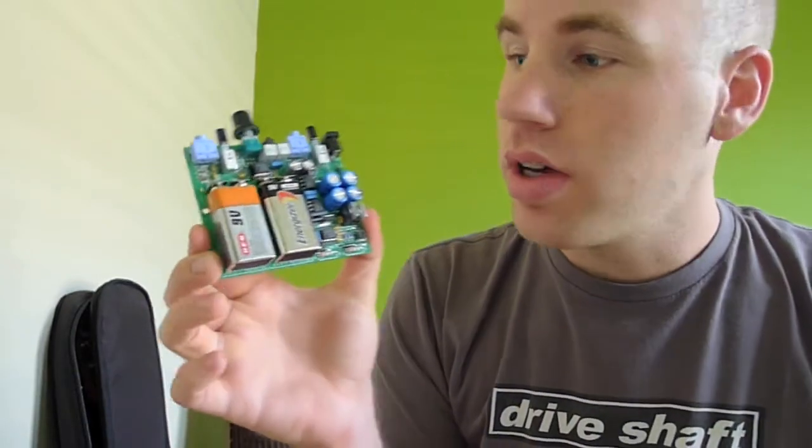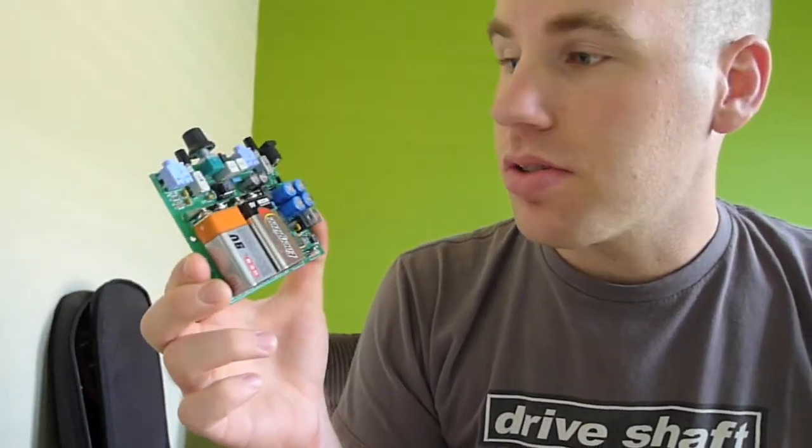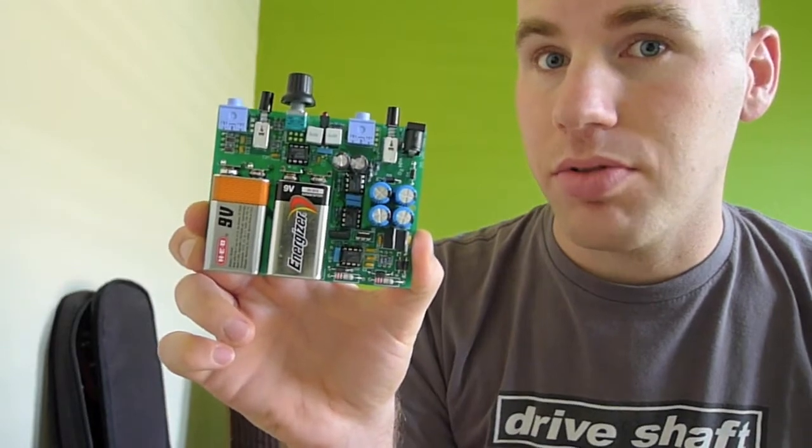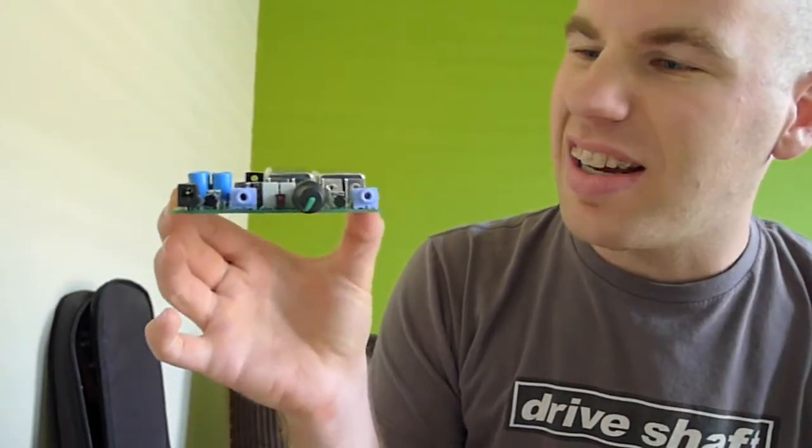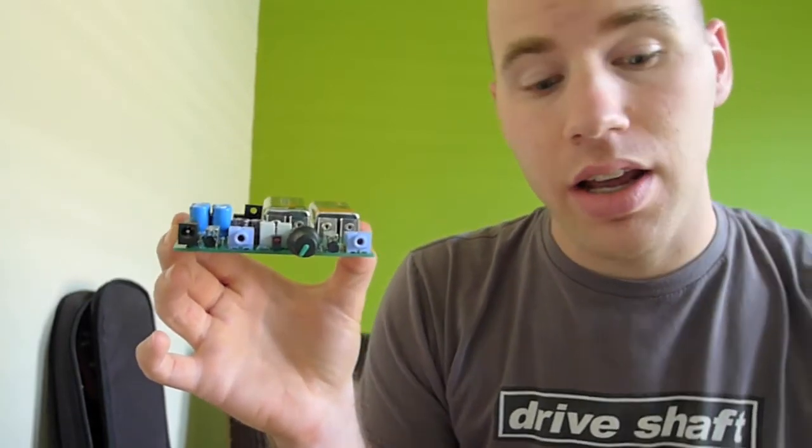This is the O2 headphone amplifier, also known as the Objective 2 headphone amplifier. As you can see here, it's just naked at this point. I have not put it in an enclosure yet, but I'm going to put it in an enclosure.